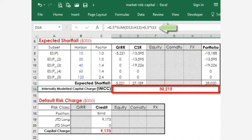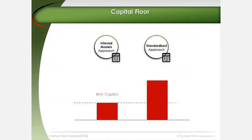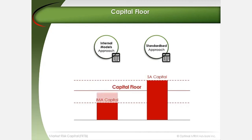The aggregate capital charge is the average of diversified expected shortfall and non-diversified partial expected shortfall capital charges, and is referred to as the internally modeled capital charge, or IMCC. The standardized approach, or a portion thereof, is expected to set a floor to the internal models approach. This means that, even if a bank is approved for using the internal models approach, its minimum capital for market risk may be set higher as a percentage of capital measured under the standardized approach.